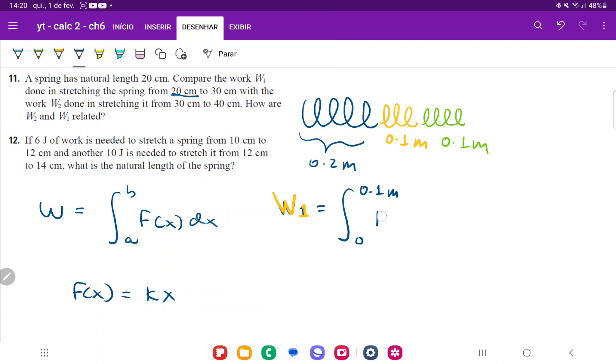W1 is the integral of F(x)dx, and F(x) is kx, so that's kx dx. If we integrate this, W1 is k times x squared divided by 2, going from 0 to 0.1.